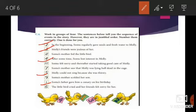The little bird cried and her friends felt sorry for her, so it comes at sixth position. Somo's mother saw that Molly was lying half dead in the cage, so it is number seven. Somo's mother fed the little bird, number eight. Somo's mother scolded her son, so it is number nine. And at last what happened? Somo felt sorry and thereafter started taking good care of Molly, so it comes at tenth number.